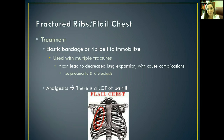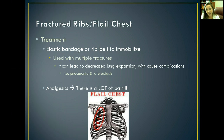The treatment of flail chest: you need to give them elastic bandaging or a rib belt to help immobilize the chest, and we use that with multiple fractures. It can eventually lead to decreased lung expansion, which causes complications like pneumonia or atelectasis over extended periods. Remember, atelectasis is lung collapse, and pneumonia can be caused by any kind of fluid getting into the lungs. We want to give them pain medications — a lot of it — because it is very painful. Stay on top of your patient's pain and ask them frequently what their pain is on a scale of 1 to 10.